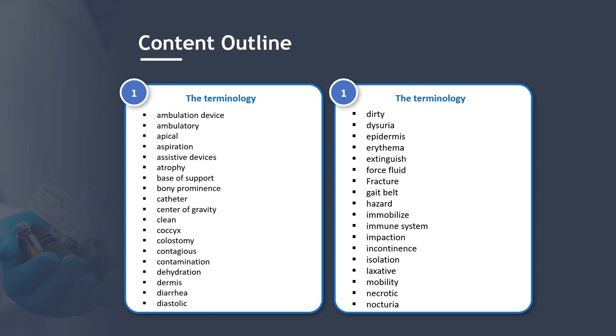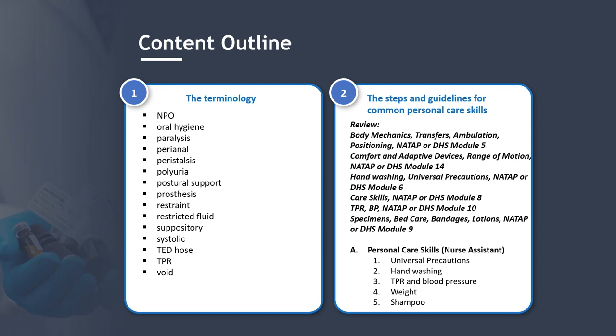Content outline Section 1: Terminology and Terminology Continued. Section 2: Steps and Guidelines for Common Personal Care Skills — review of body mechanics, transfers, ambulation, and positioning, referencing NATAP or DHS Module 5. Also covers comfort and adaptive devices, range of motion from NATAP or DHS Module 14.